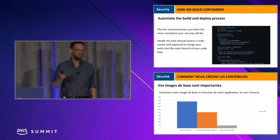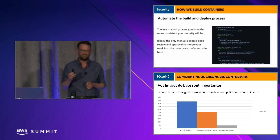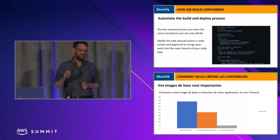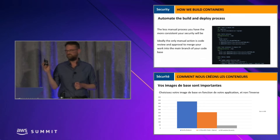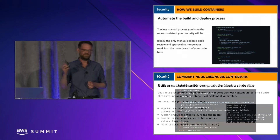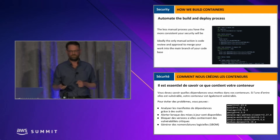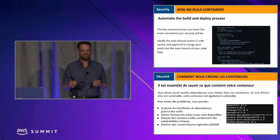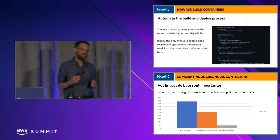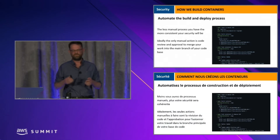The next recommendation is to automate the build and deploy process. The less manual processes you have, the more consistent your security will be. Ideally, the only manual action is code review and approval to merge your work into the main branch. The build pipeline logs into the Elastic Container Registry, builds and tags the container, pushes it to the registry, and deploys it to Lambda. Doing this manually is far more error-prone than having it happen automatically.